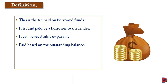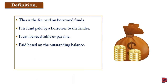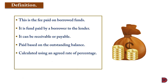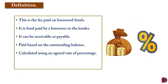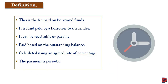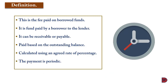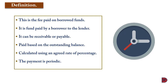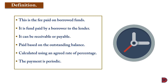Interest is normally paid on the amount unpaid at any point in time, and it is calculated as a percentage on the outstanding amount at any period. The payment is periodic — it can be monthly, six-monthly, annually, or every two years or so.